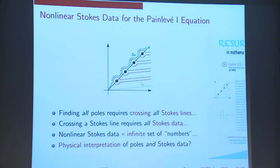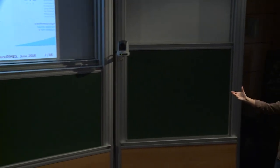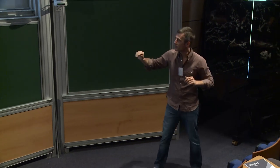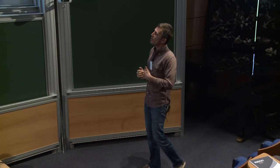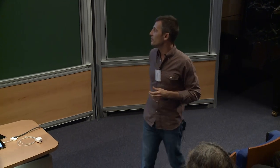To find where all these poles are, we have to do Stokes phenomenon. In order to find where all these zeros are, you have to cross lines where there are singularities on the Borel plane. I need to know how to cross all Stokes lines in order to tell you where all these zeros are. But every time I cross a Stokes line, I need Stokes data. And because the problem is nonlinear, I have an infinite set of numbers. I need to know all these numbers — that's part of the ongoing project. We'd also like a physical interpretation of what these poles are and what this Stokes data is.